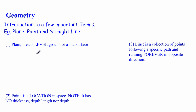The first term I'd like to look at is: what is a plane? By definition, a plane means level ground, or we're working with a flat surface. A typical example — if you're sitting around a table, the top of the desk would be a flat surface. That's what we're referring to when we speak about a plane.